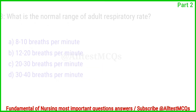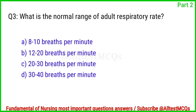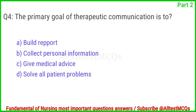Question No. 3. What is the normal range of adult respiratory rate? Right answer is Option B: 12 to 20 breaths per minute.